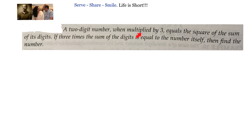A 2-digit number when multiplied by 3 equals the square of the sum of its digits. If 3 times the sum of the digits is equal to the number itself, then find the number. To solve this problem,